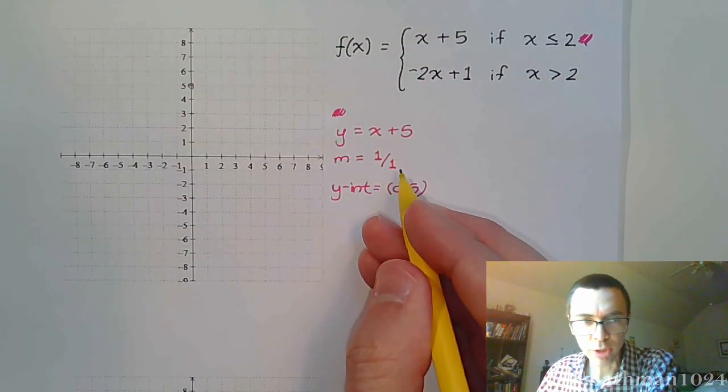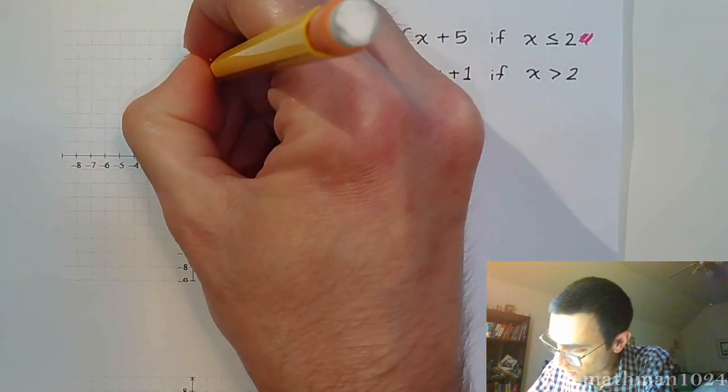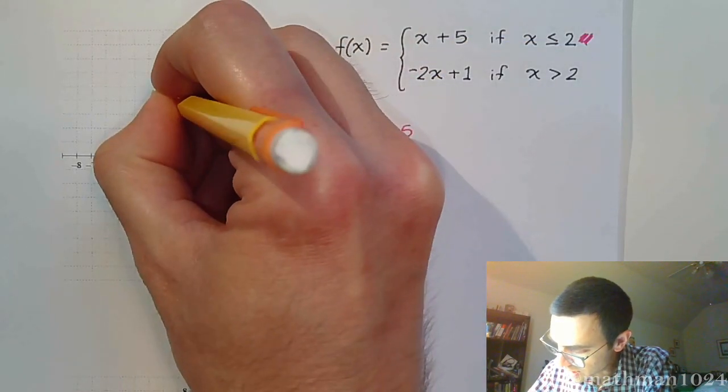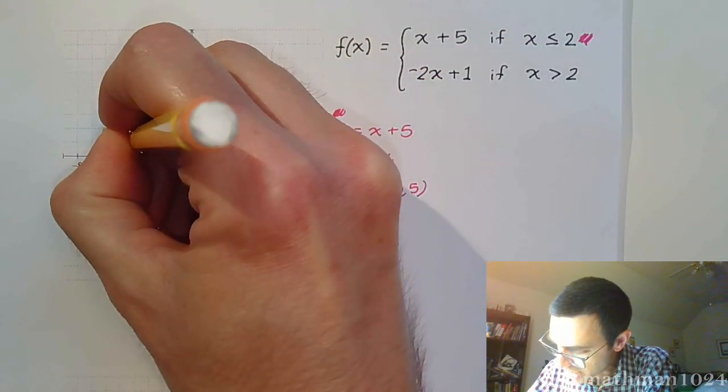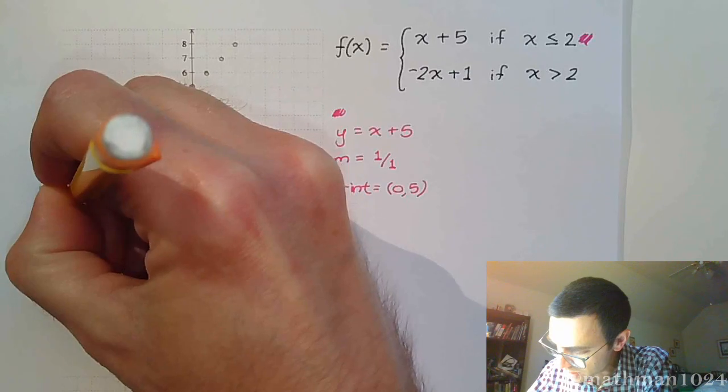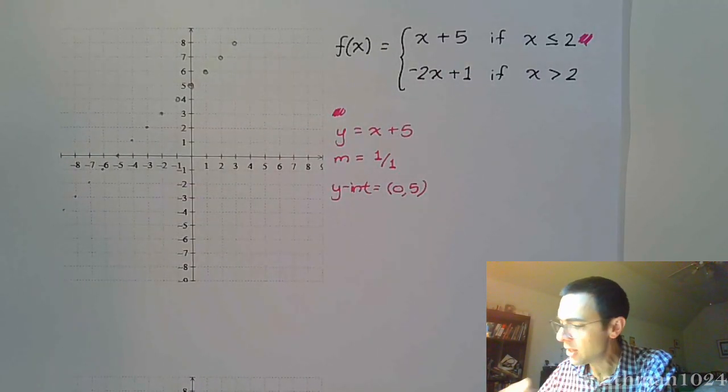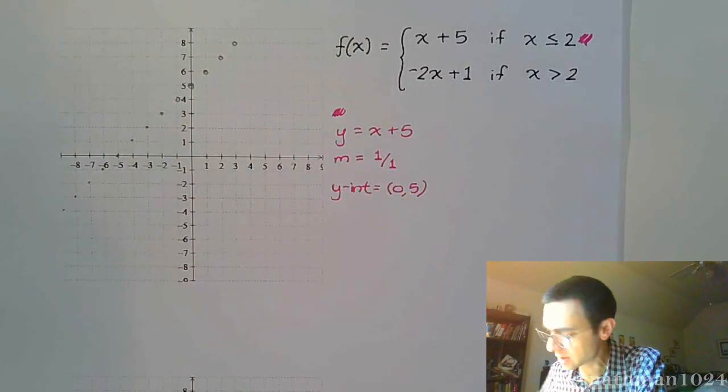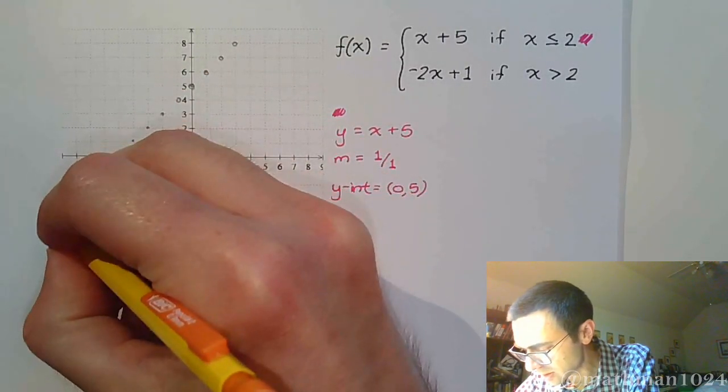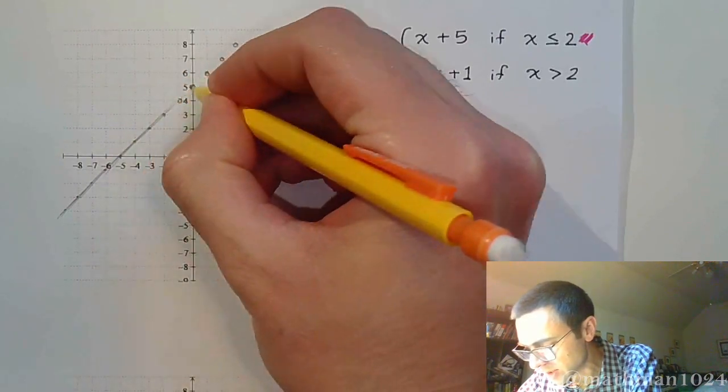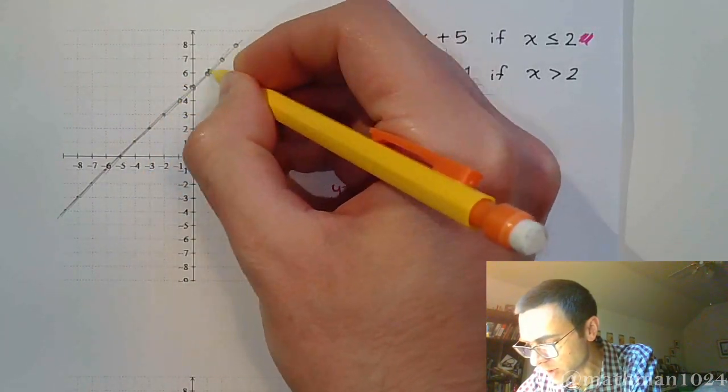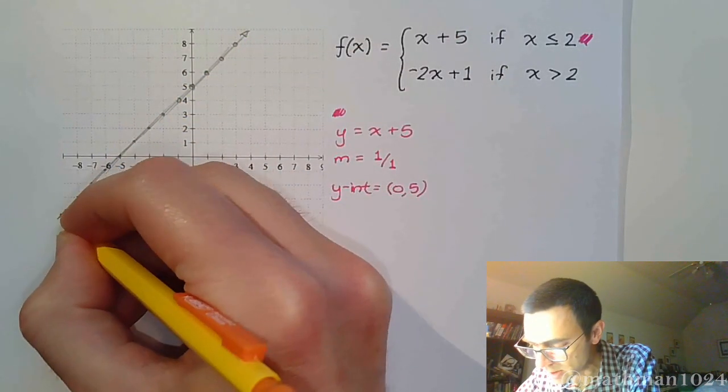Then you're using the slope of 1 over 1. So, up 1 over 1 like this, and the same thing going back down and to the left. If we were to connect these dots, we have this nice linear shape, which is what we expect, because we have a line.